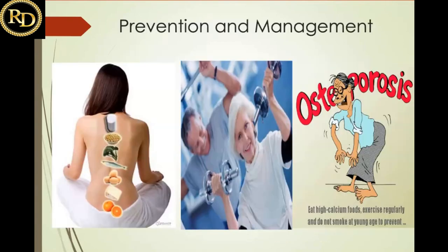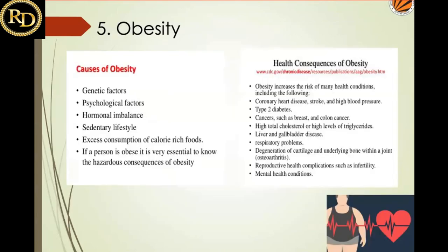To prevent and manage osteoporosis, consume calcium-rich foods, exercise regularly, and avoid smoking. Vitamin D is critical because it helps metabolize calcium — without it, calcium consumed is not absorbed. Calcium-rich sources include milk and dairy products, broccoli, and ragi, which is an excellent vegetarian source of calcium. Consuming these ensures RDA for calcium is fulfilled.